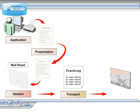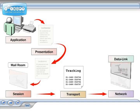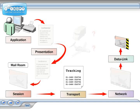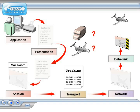The address is then added to the envelope. In the OSI model, the network layer is where the destination address is added to the packet. The next step is where a secure seal is applied to the envelope and the type of transportation is chosen. In the OSI model, the data link layer is where the packet is put into the correct format for transmission.